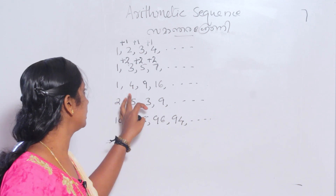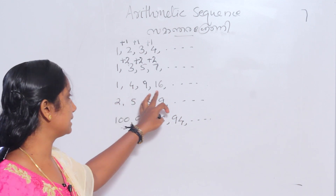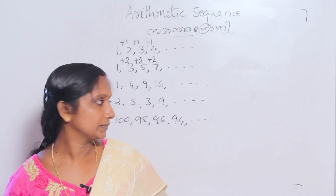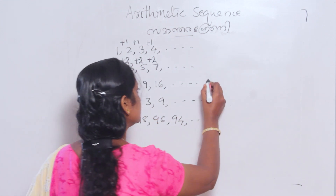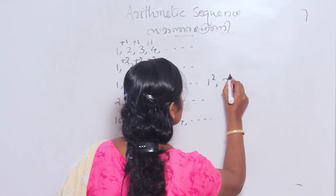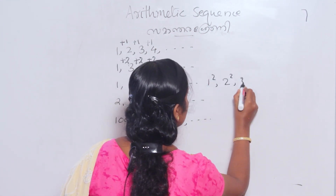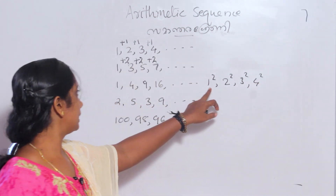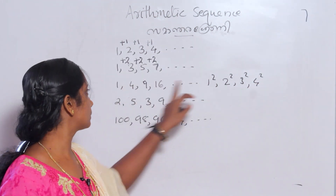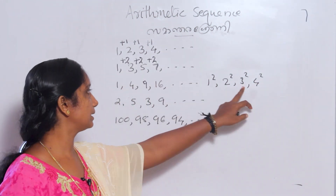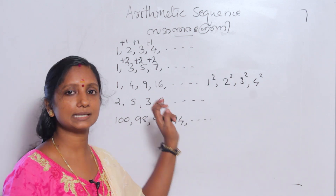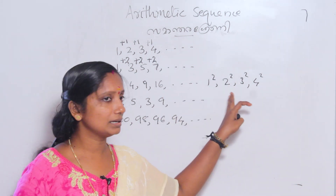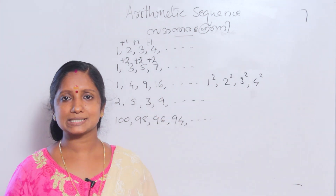The third set is 1, 4, 9, 16. These numbers are 1 squared, 2 squared, 3 squared, 4 squared. So 1 squared is 1, 2 squared is 4, 3 squared is 9, 4 squared is 16.